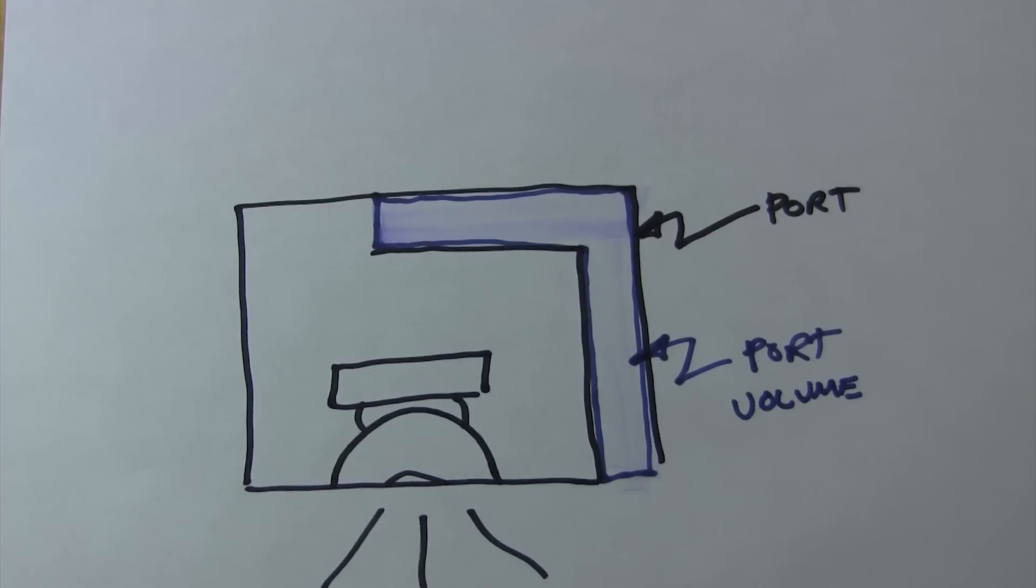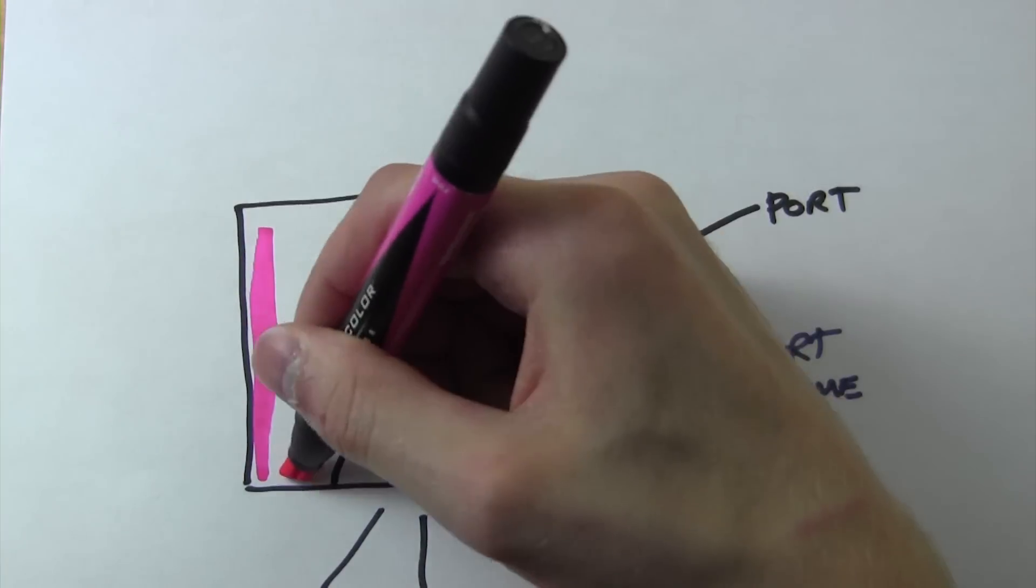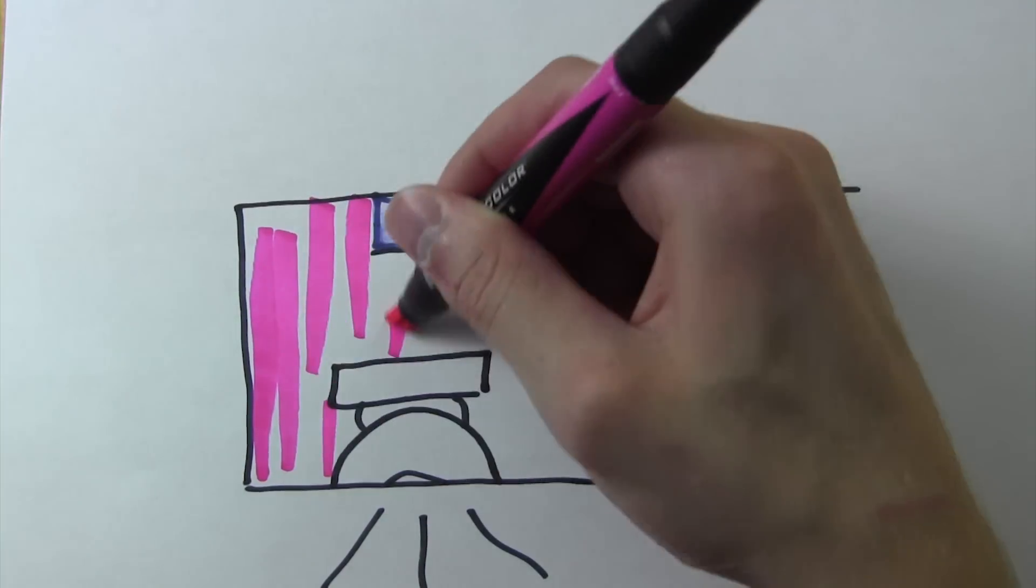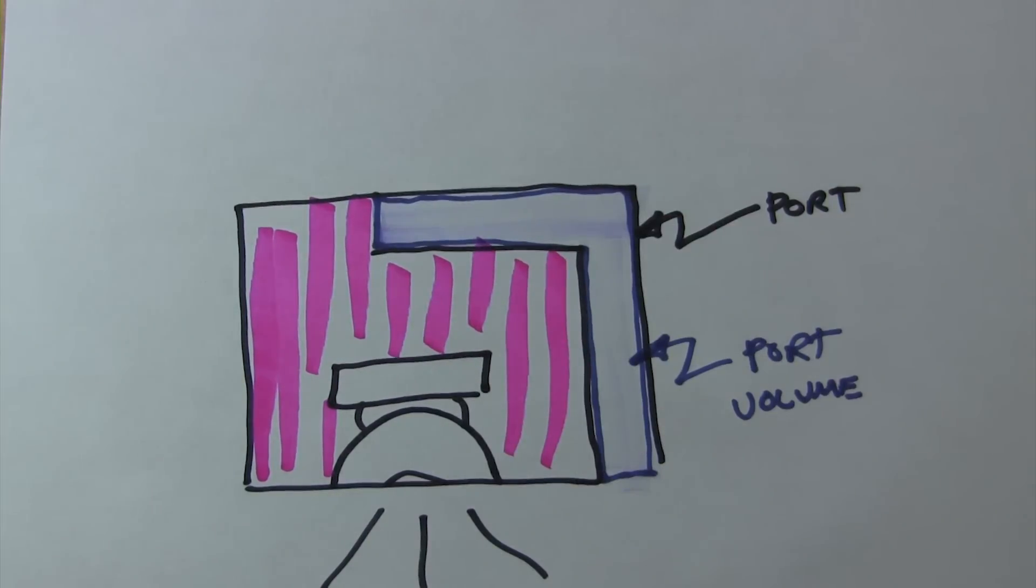So if someone asked how much air space the sub actually had, and in this case, let's say it had 2 cubic feet, we'd be referring to the area shown in the pink highlighting.